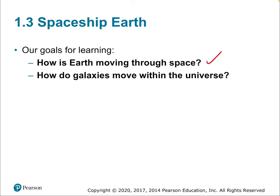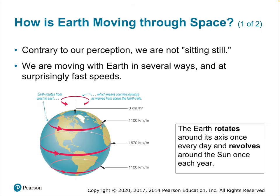Earth also rotates on its own axis. At the equator, the speed of rotation is about 1,670 kilometers per hour relative to the fixed axis. The Earth rotates once per day. The resulting centripetal force is about 0.3% as strong as gravity — measurable, but nothing you would notice.